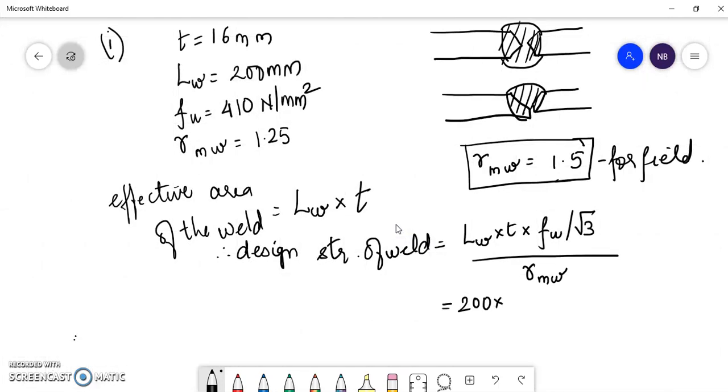Substituting for all these terms, we get 605,987 newton, which is 605.987 kN.